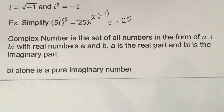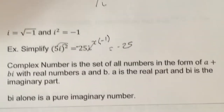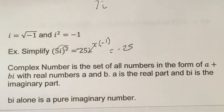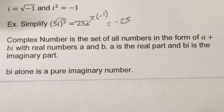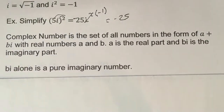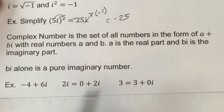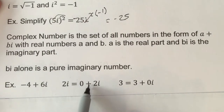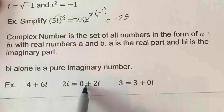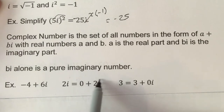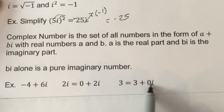What we were dealing with before — like negative 25 — that's a pure real number. We don't usually worry about calling it that; we just know it's a real number. bi is a pure imaginary. For example, negative 4 plus 6i has a real part of negative 4 and an imaginary part of 6i. The number 2i is just 0 plus 2i — a pure imaginary. And 3 is a pure real, which could be written as 3 plus 0i.